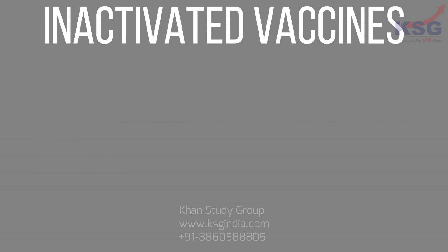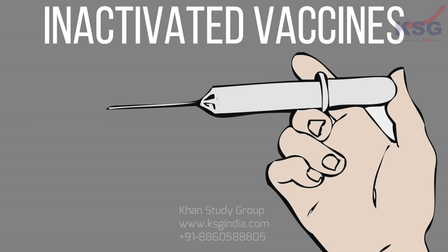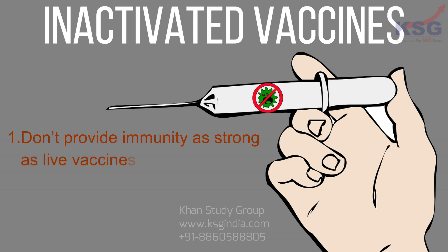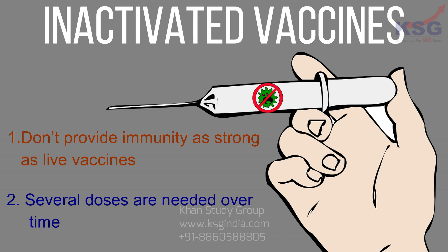Inactivated vaccines use the killed version of the germ that causes a disease. Inactivated vaccines usually don't provide immunity as strong as live vaccines. Several doses are needed over time in order to get ongoing immunity against these diseases.